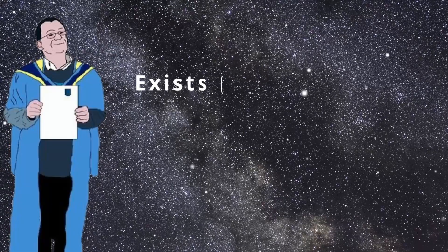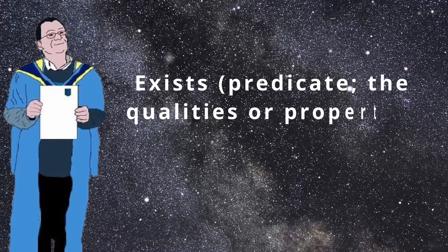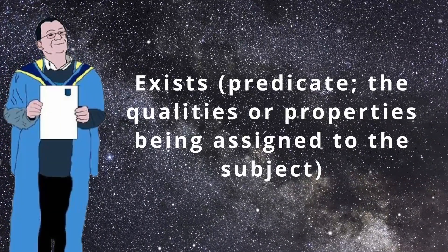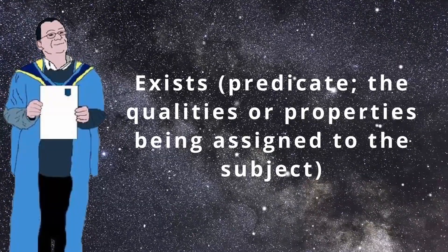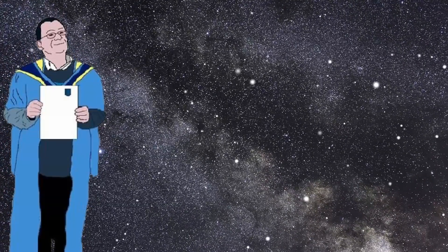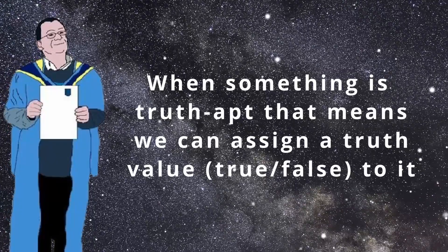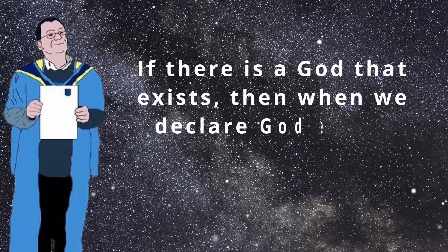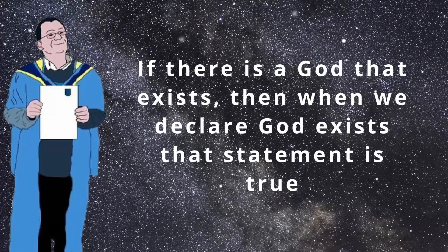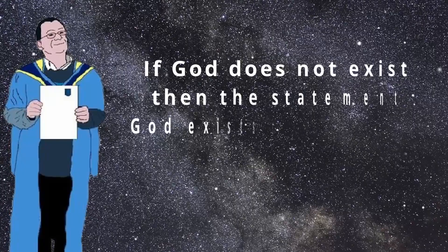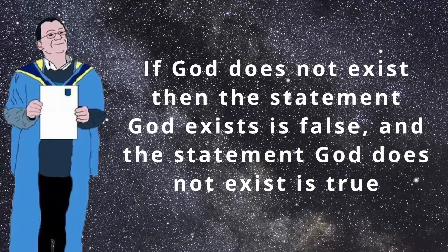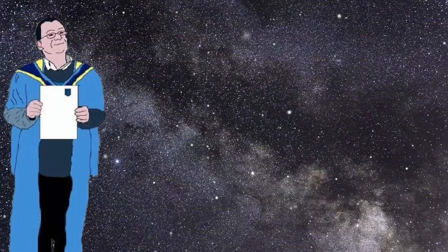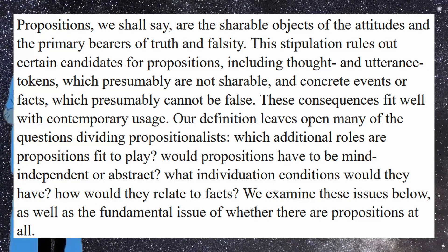This proposition also contains a predicate — in this case, 'exists.' The predicate describes some quality or property that relates to the subject, so here the subject God has the quality or property of existence. This makes the proposition truth-apt, meaning the statement could be true or false. If there is a subject God and this subject contains the quality of existence, then the statement is true; if not, it is not a true statement. The truth of the statement depends on what is meant by 'God' and 'existence,' but we can get into that in a future video.